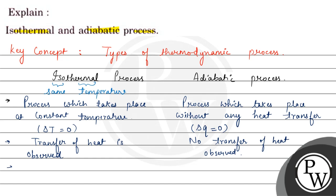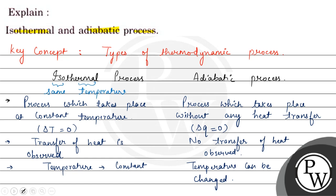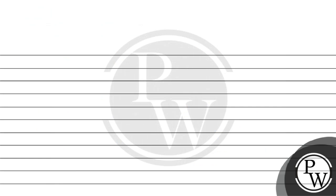Regarding temperature: in an isothermal process, temperature remains constant throughout. Whereas in an adiabatic process, temperature can change during the process.